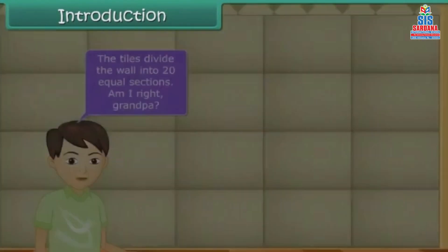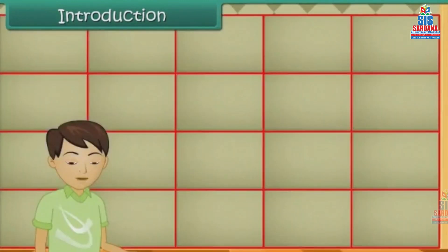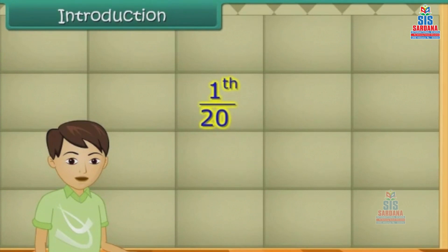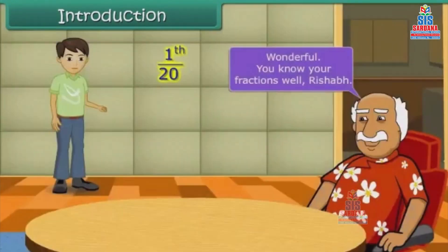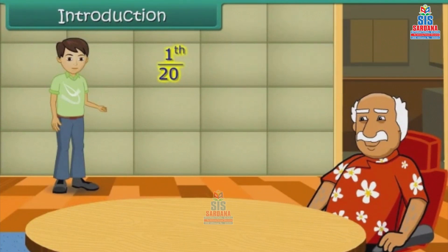Am I right, Grandpa? You are absolutely right, Rishabh. Each section represents one by twentieth of the whole wall, Grandpa. Wonderful! You know your fractions well, Rishabh. In this lesson, you will learn more about fractions.